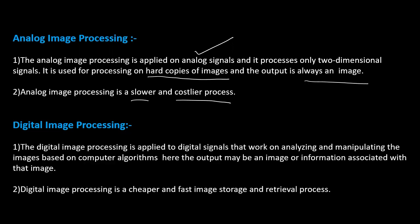We always look at digital image processing. Nowadays the complete world is concentrating on and using the digital environment. Digital image processing is applied to digital signals and works by analyzing and manipulating the image based on computer algorithms. The image is captured through cameras and the output may be an image or it can give some useful information associated with that image — unlike analog, where the output is always an image. Digital image processing is cheaper and faster for image storage and retrieval.